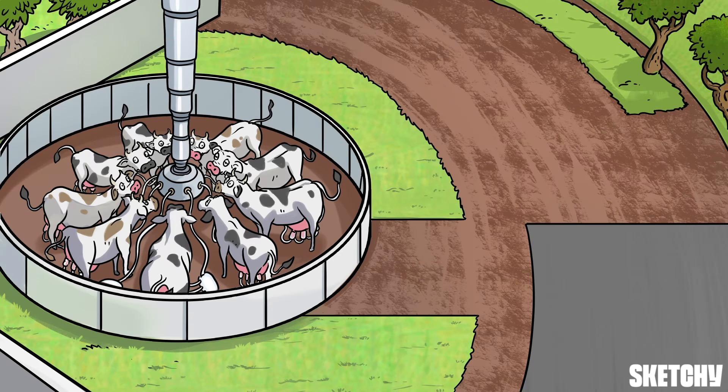In this sketch we're going to cover the anatomy of the breast and axilla. And since one of the main functions of breast tissue is to make milk, what better place to set this sketch than a dairy farm?